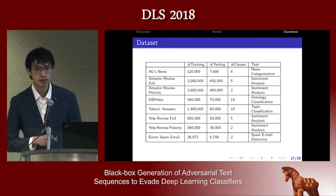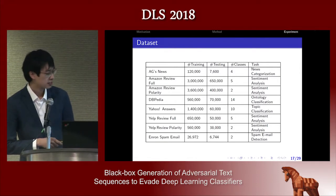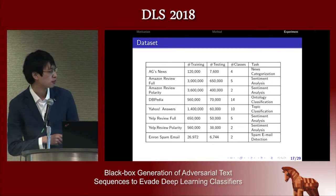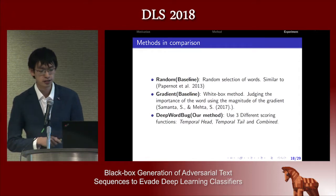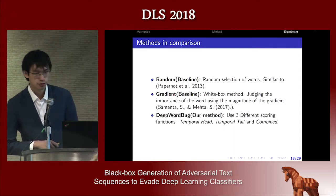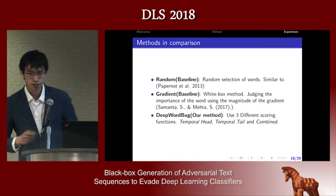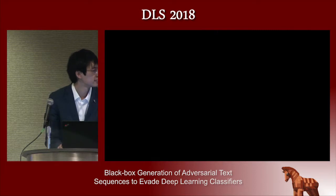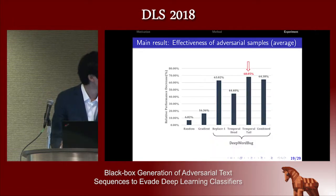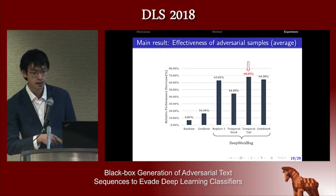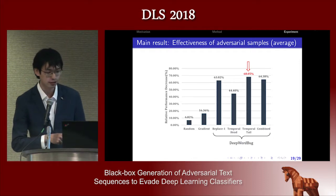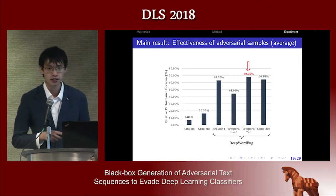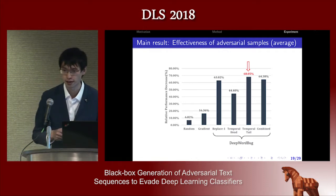We performed experiments on large text datasets — all classification tasks but with different numbers of classes. We compare our work with two baselines: the first is random word selection, and the second judges word importance using the magnitude of gradient. Our Deep World Bug method achieves much better results compared to the previous methods. The y-axis is relative performance decrease averaged over eight datasets. For more details, you can read our arXiv paper with the same title.